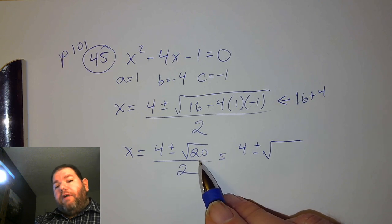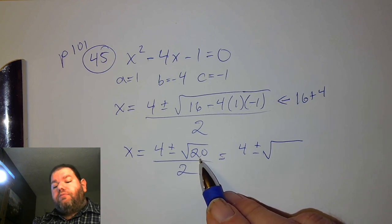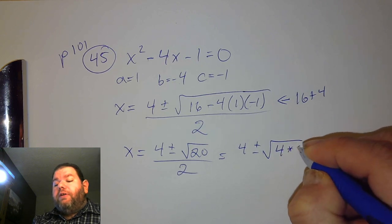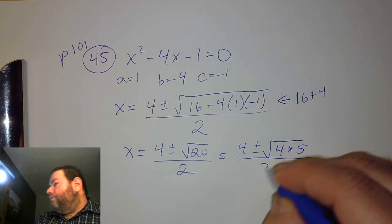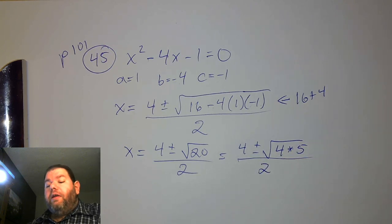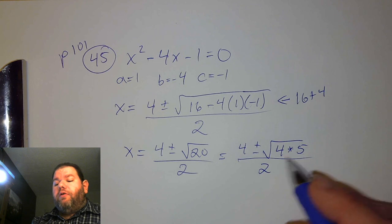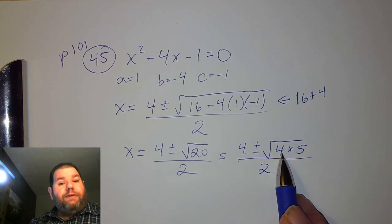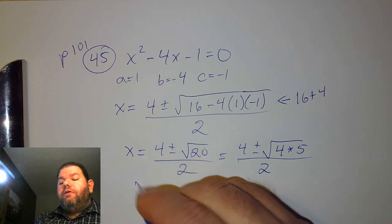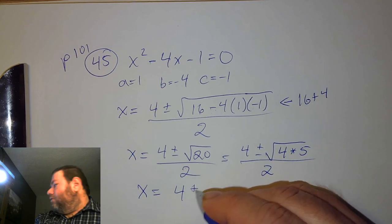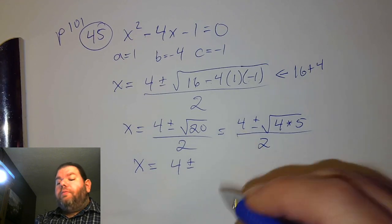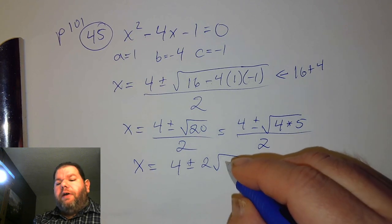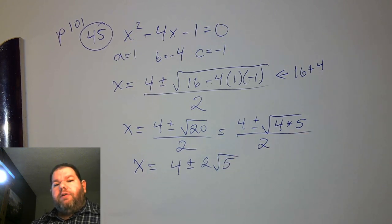We know that 4 is a factor of 20, and 4 is a perfect square. So we can express that as 4 times 5 under the radical. So we have the square root of 4 times 5. We can compute the square root of 4 — we know that's 2. But we cannot take the square root of 5 and come up with a whole number value, so we'll leave the 5 under the square root.